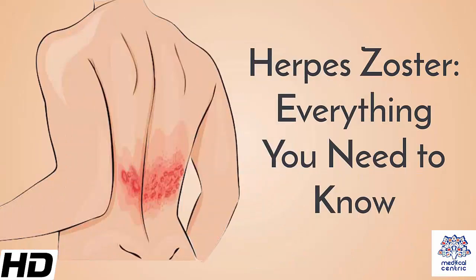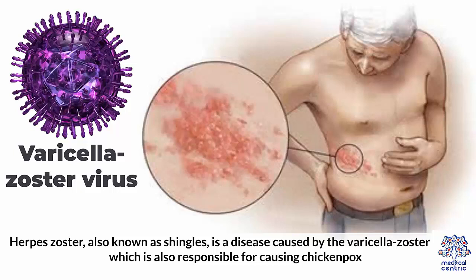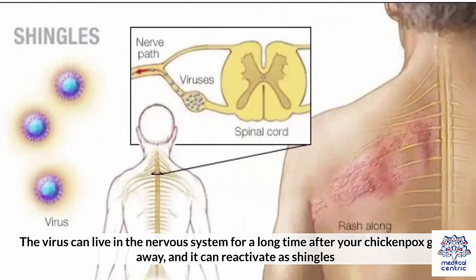Today's topic is Herpes Zoster – Everything You Need to Know. Herpes zoster, also known as shingles, is a disease caused by the varicella zoster virus, which is also responsible for causing chicken pox. The virus can live in the nervous system for a long time after your chicken pox goes away, and it can reactivate as shingles.